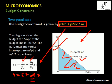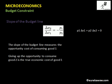The x-intercept m/p1 can be reasoned intuitively: at that point, consumption of x2 is zero, so the consumer spends the entire income on good one. With income m and price p1 per unit, the consumer can purchase m/p1 units of good one. Similarly m/p2 is the y-intercept. The negative sign in the slope indicates the budget line is downward sloping.